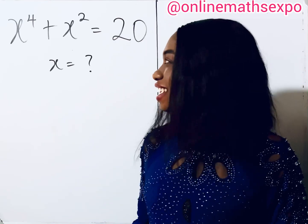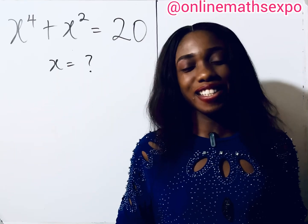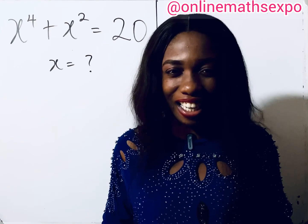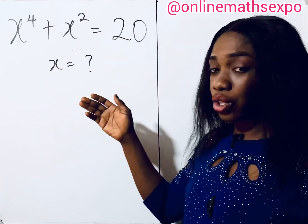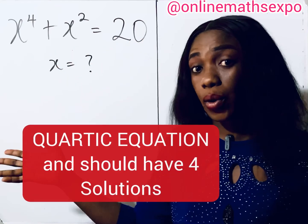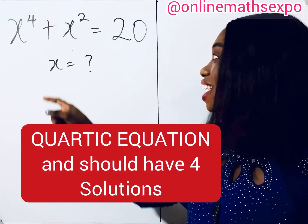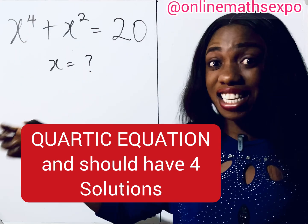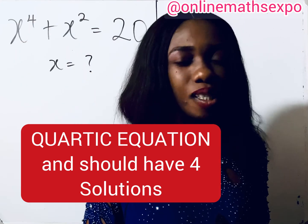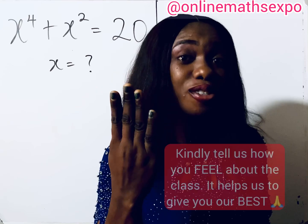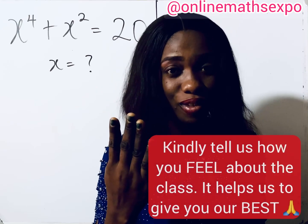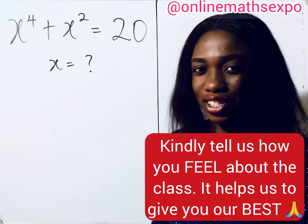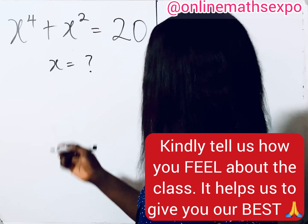Welcome, and let's solve the second bridge interview question together — it's very simple. Looking at this equation, we call this kind of equation a quartic equation because the highest power of x is four. That means we expect to have four values of x. Let me show you how to solve this kind of equation, beginning with the solution.